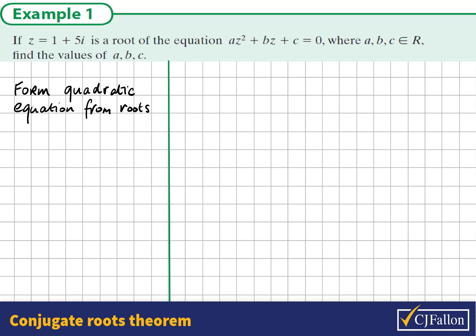z squared minus the sum of the roots times z plus the product of the roots must equal 0. This is useful for forming quadratic equations.